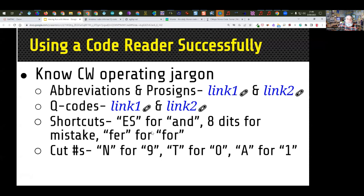There are also shortcut words used quite a bit. There's always the temptation by CW operators to make everything shorter. Instead of sending the word 'and', they send the abbreviation for ampersand, which is ES — dit dit dit dit. So you'll hear that instead of 'and' quite often. Also, if you make an error, you send eight dits. And sometimes it won't be a full eight, but once you get past five it's not the letter number five.